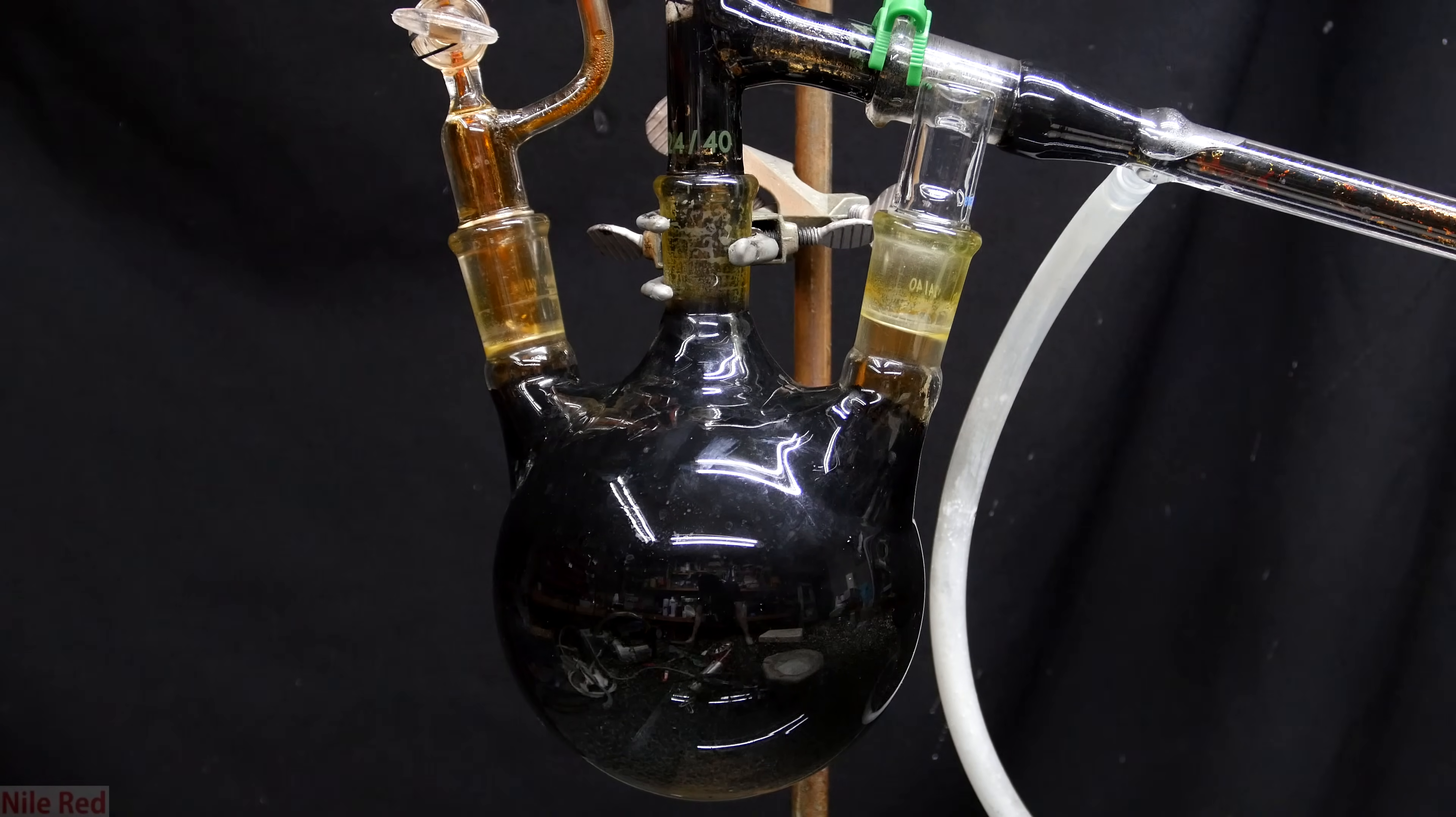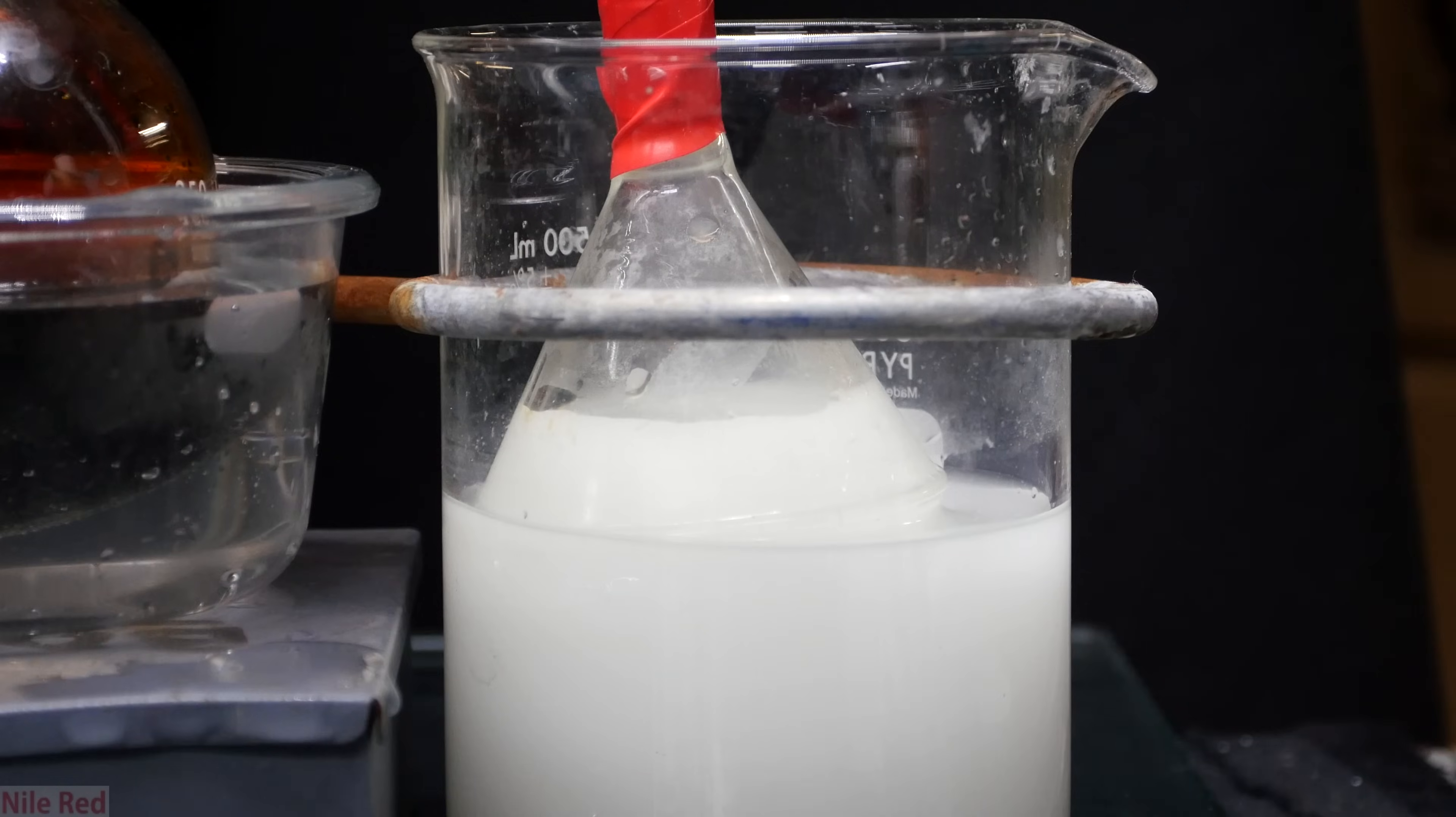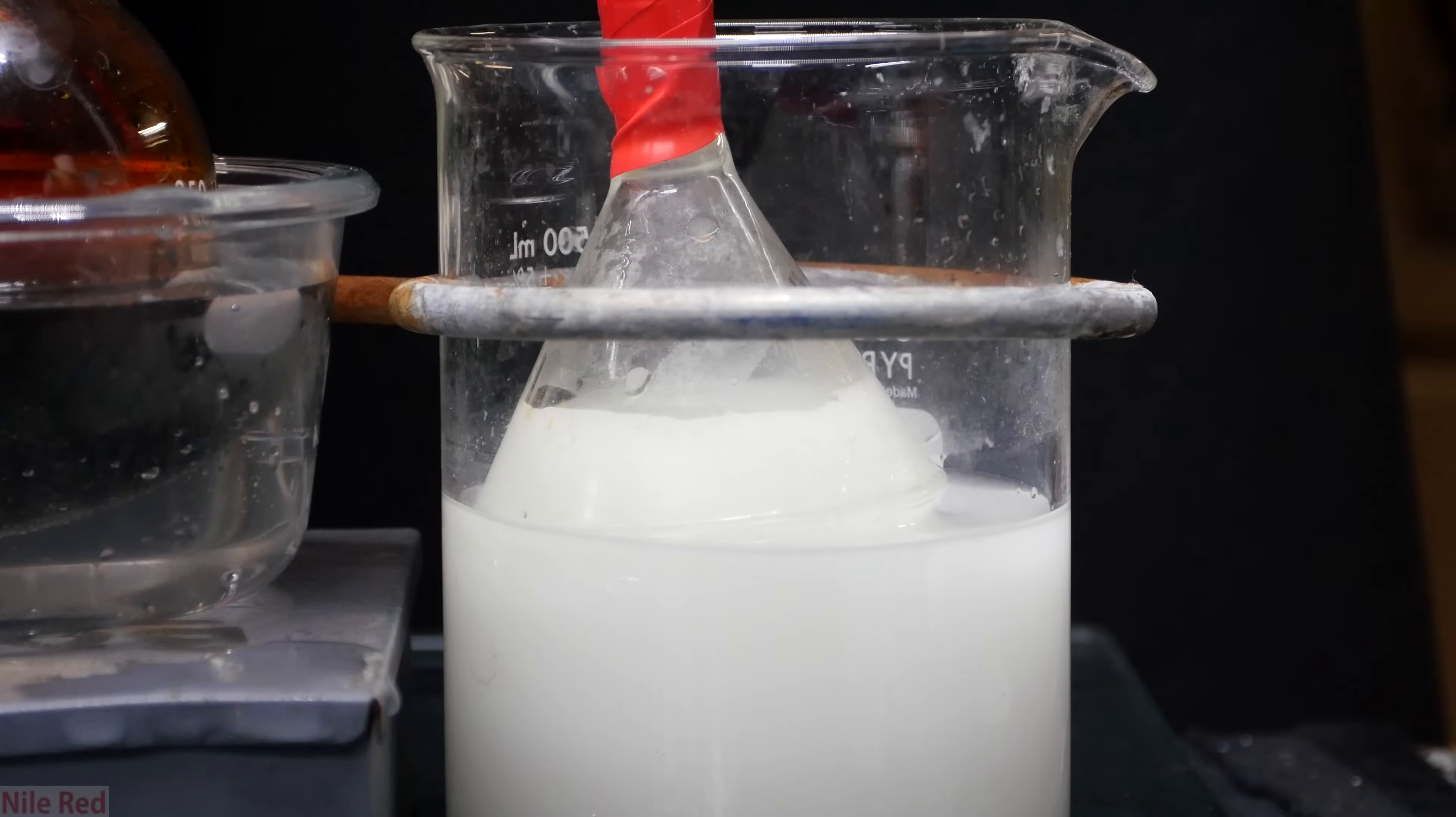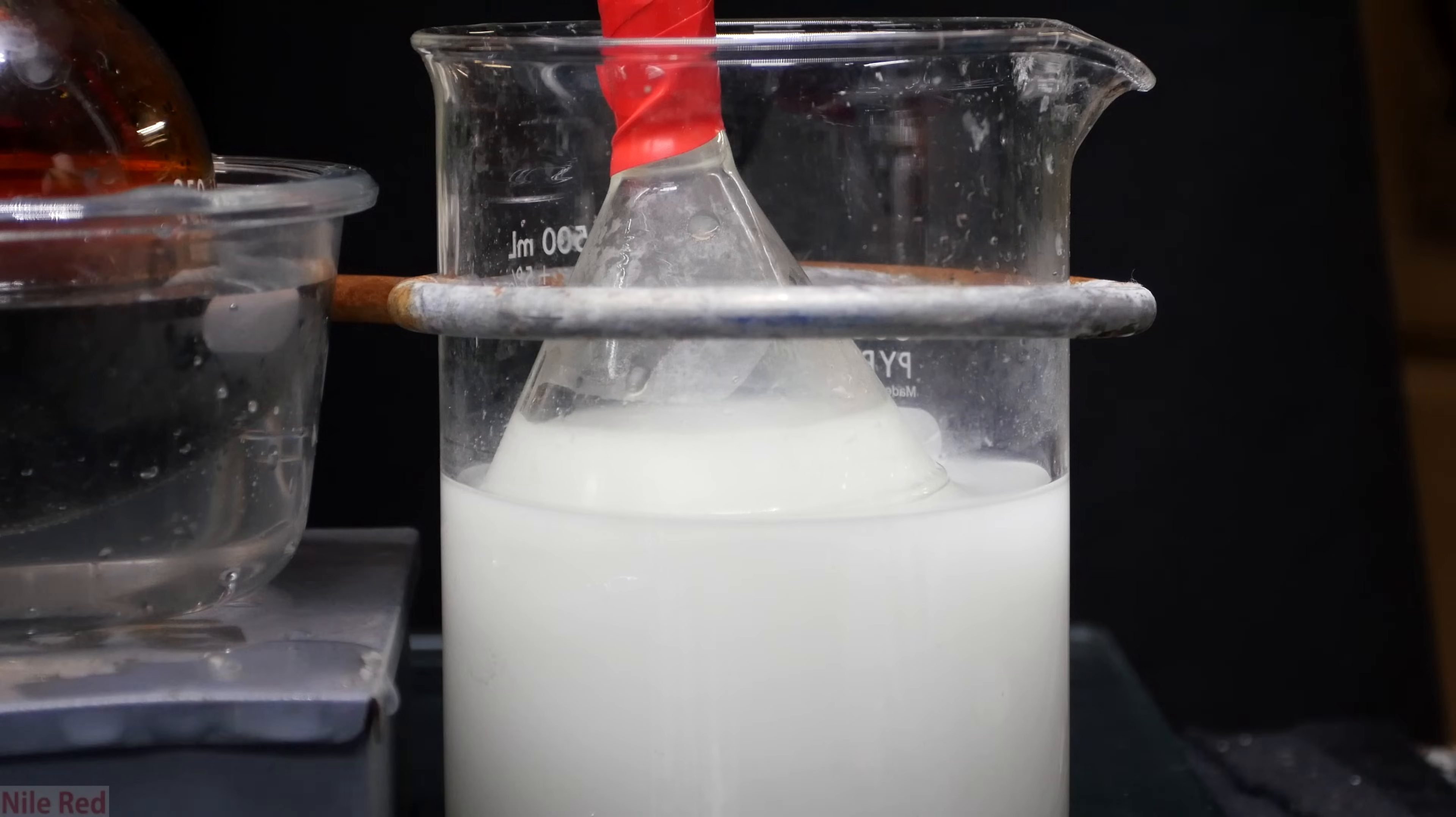Anyway, once it's done, the flask is taken off heat and allowed to cool. Just pretend that you can't see me standing there in the background. Here I want to illustrate the purpose of the inverted funnel trap. As the apparatus cools down, the air volume inside it will shrink and because of this, it pulls a slight vacuum.